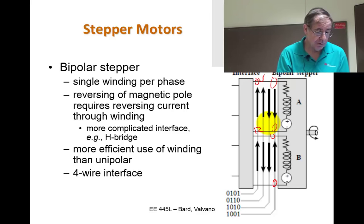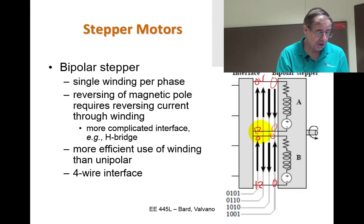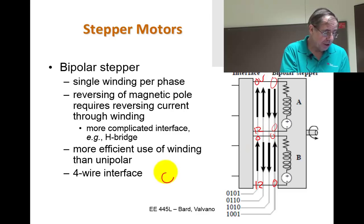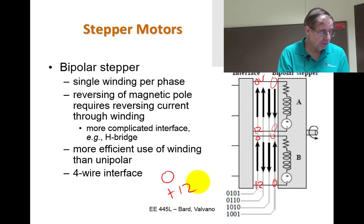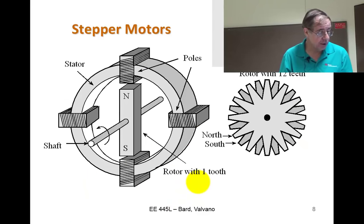For a bipolar stepper, to get current to go up I need to generate zero volts on one side and 12 volts on the other, and vice versa. So I need an output that can be either zero or plus 12 volts — and there are chips for doing that.